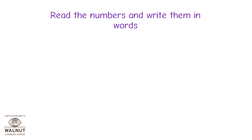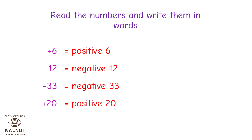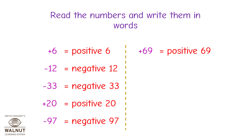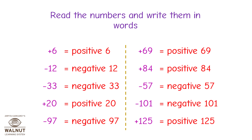Read the numbers and write them in words. Plus 6 is equal to positive 6. Minus 12 is equal to negative 12. Minus 33 is equal to negative 33. Plus 20 is equal to positive 20. Minus 97 is equal to negative 97. Plus 69 is equal to positive 69. Plus 84 is equal to positive 84. Minus 57 is equal to negative 57. Minus 101 is equal to negative 101. Plus 125 is equal to positive 125.